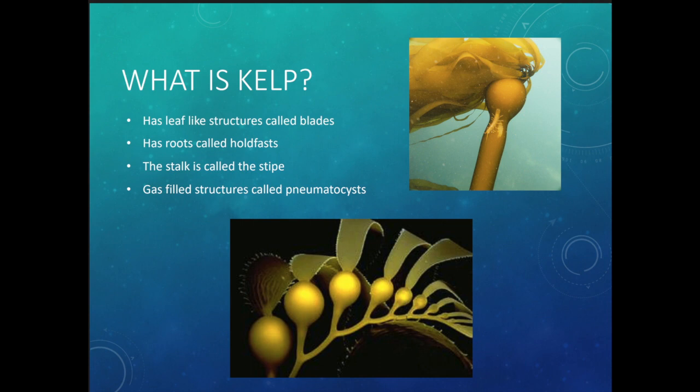The long stalk of the kelp is called the stipe. Kelp also has gas-filled structures called pneumatocysts — small balls filled with gas that help the kelp stand upright. You might remember from our coral lessons we have nematocysts, which are stinging cells, and in mangroves we have pneumatophores, which are roots. In kelp, those gas-filled balls are the pneumatocysts. Without them, the kelp would just flop over — that's why you see kelp forests standing tall.